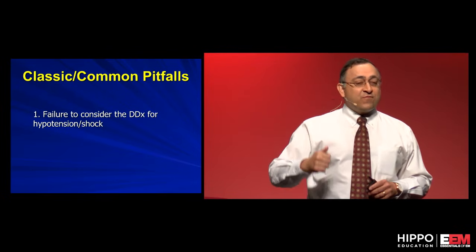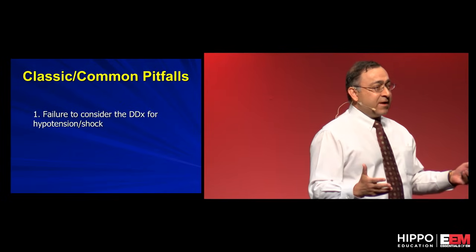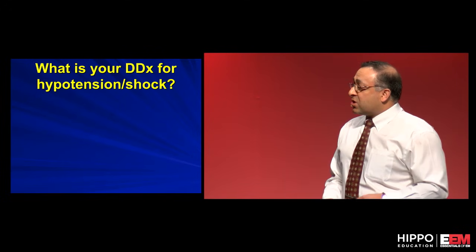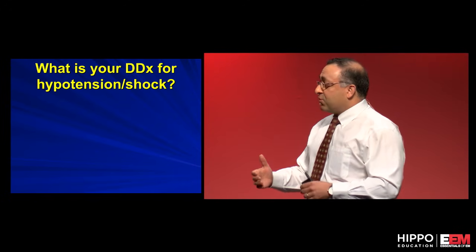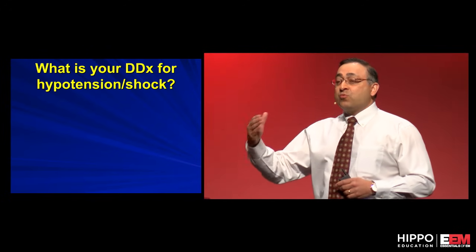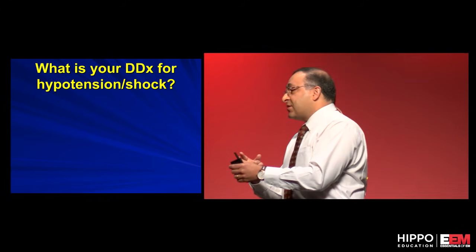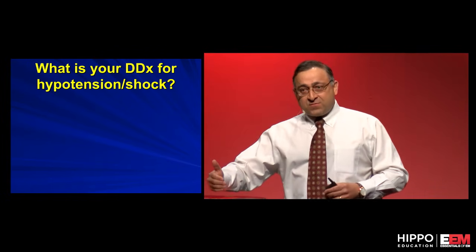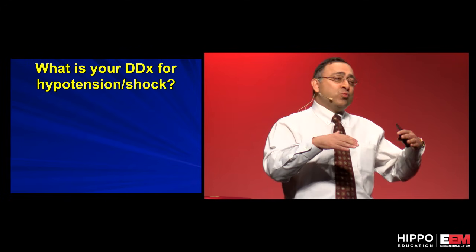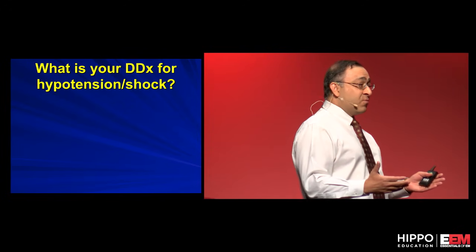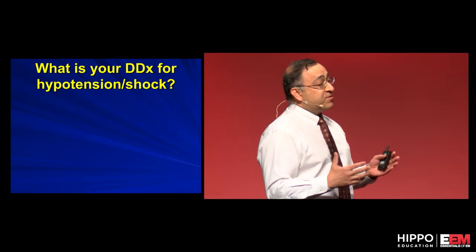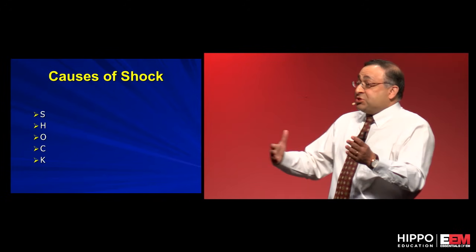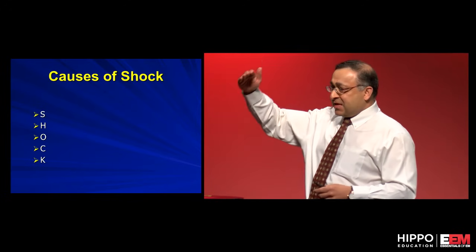Number one: failure to consider the differential diagnosis for hypotension and shock. When somebody is hypotensive, what is your differential? A lot of us learned to think about three big categories: hypovolemic, obstructive, and distributive. I can never remember all the subtypes, so I came up with a very simple mnemonic called SHOCK. Every one of these letters stands for two things.